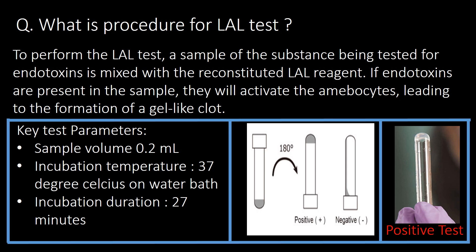In this simple test, we need to add two things: the sample being tested and the reconstituted LAL reagent. In the test tube, we need to invert it at 180 degrees and check for clot-like formation after 27 minutes of incubation. You can see the photographs below for understanding how the gel-like clot is formed if the test is positive, meaning that the test sample contains endotoxins.